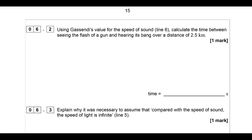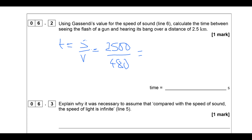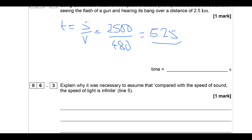Using Gassendi's value for the speed of sound, calculate the time between seeing the flash of a gun and hearing the bang over a distance of 2.5 km. We assume light travels infinitely quickly so the flash arrives at time zero. Time equals displacement divided by velocity: 2500 / 480 = 5.2 seconds. That seems a reasonable time to measure even in the old days.